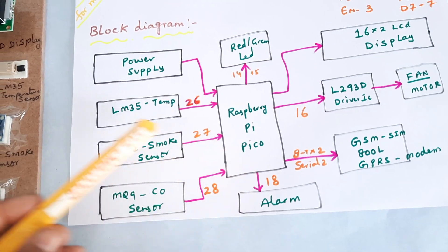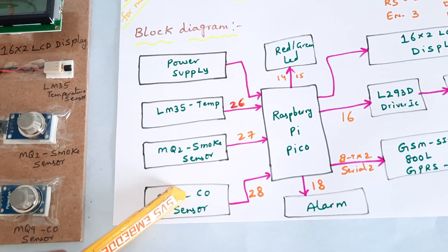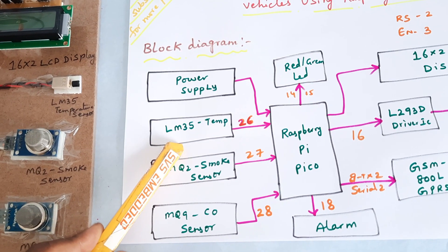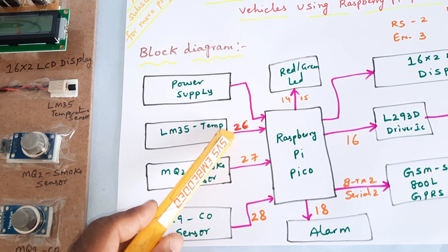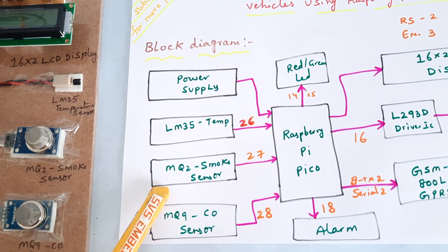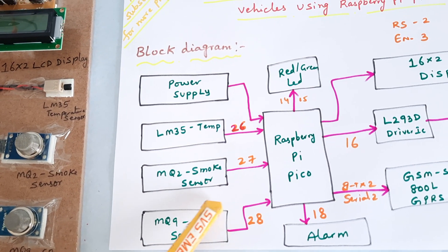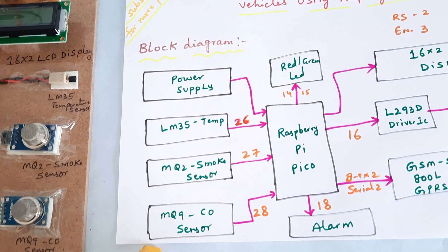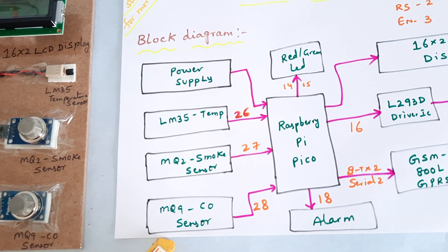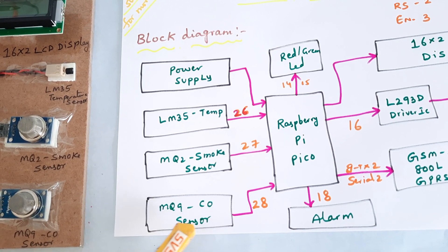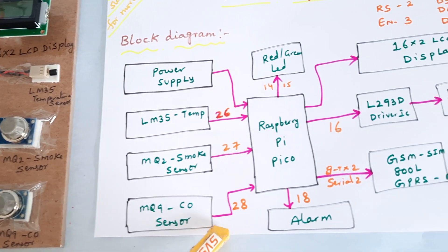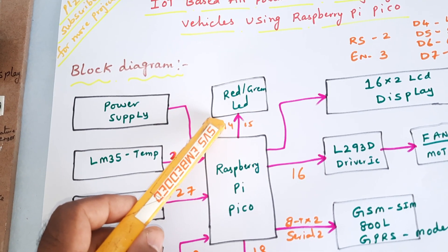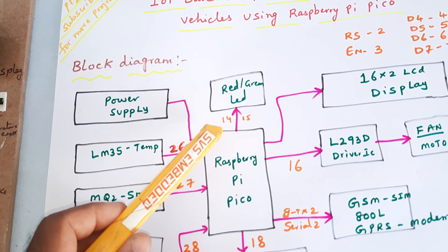We are using the RP2040 IC and a total of three analog sensors. The LM35 temperature sensor is connected to ADC0 (pin 26), the MQ2 smoke sensor is connected to ADC1 (pin 27), and the MQ9 carbon monoxide sensor is connected to ADC2 (pin 28). The red LED and green LED are connected to pins 14 and 15.